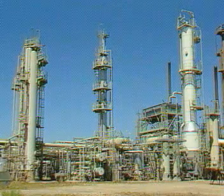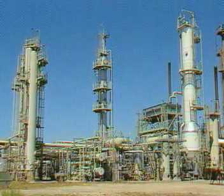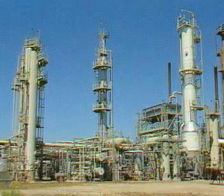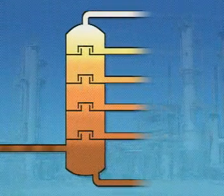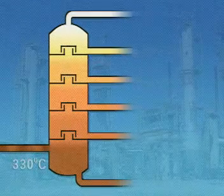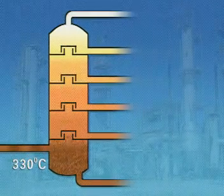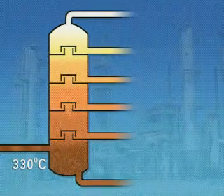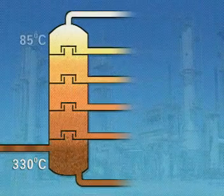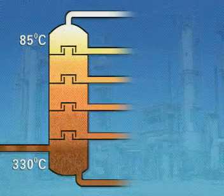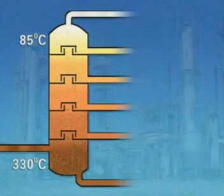Industry uses the same process, but on a mammoth scale, in huge fractional distillation columns. The hot oil enters near the bottom at a temperature of 330 degrees Celsius. The column becomes cooler towards the top. Fractions which remain as vapor at 85 degrees Celsius go straight to the top and are piped away.